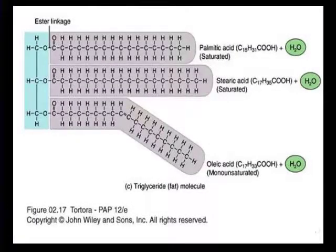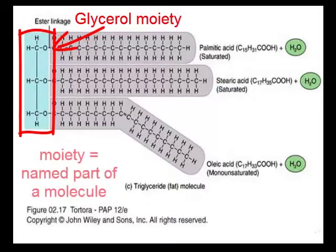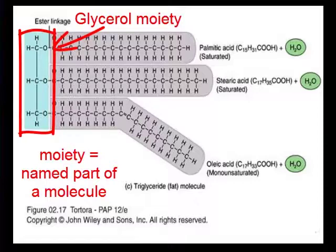Recall that I talked about triglycerides being formed from a glycerol moiety. Moiety is just a fancy chemical word that means that part of a molecule or that section of a molecule. When we have a big complicated molecule, we tend to break it into groups, and those groups are called moieties. It's a French word — it means half or part.